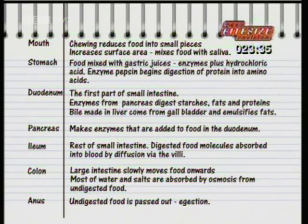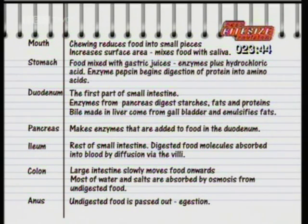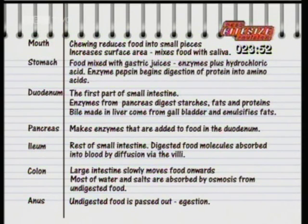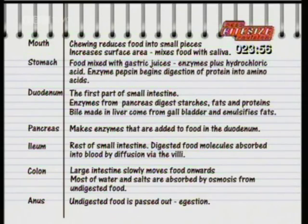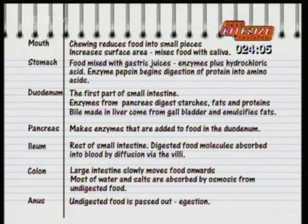The pancreas makes enzymes that are added to food in the duodenum. The ileum is the rest of the small intestine, where digested food molecules are absorbed into the blood by diffusion through the villi. The colon is the large intestine that slowly moves food onwards. Most of the water and salts are absorbed by osmosis from undigested food. Undigested food is passed out of the anus.